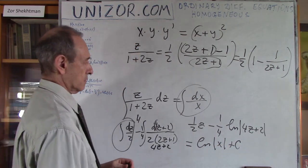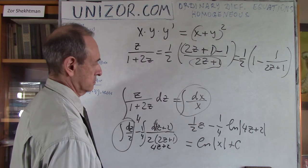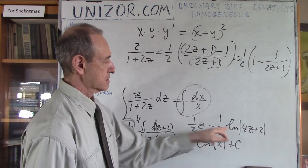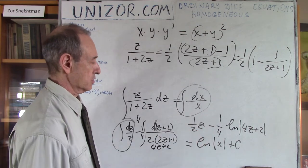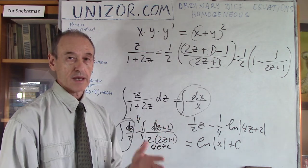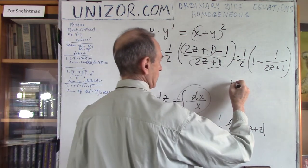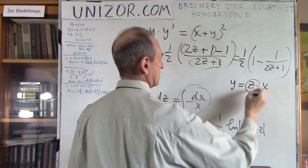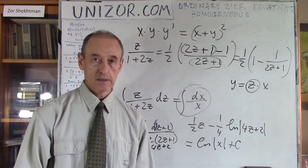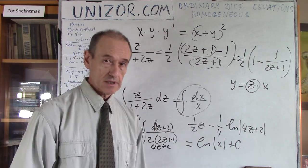Again, this is not easy to resolve explicitly for z — it's a combination of logarithm and polynomial. But substituting back z = y/x gives an expression combining x and y that implicitly defines y as a function of x.